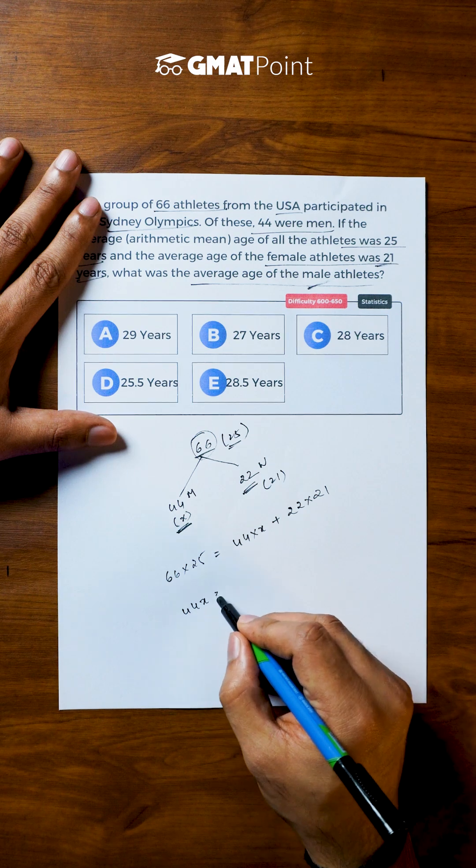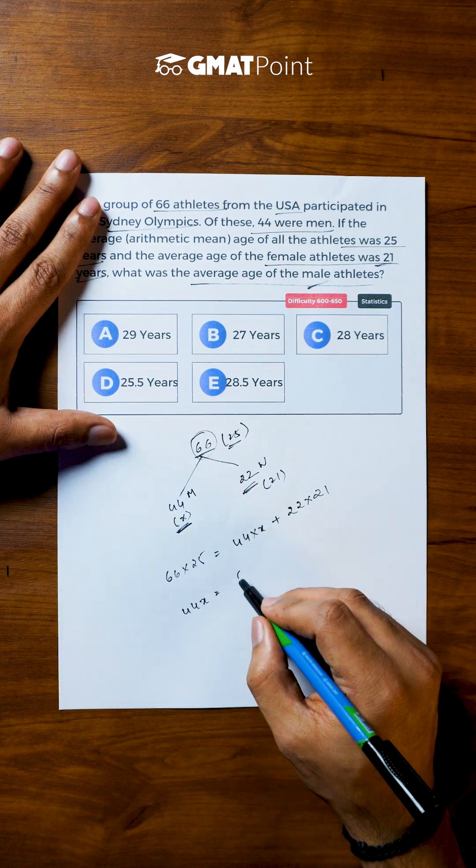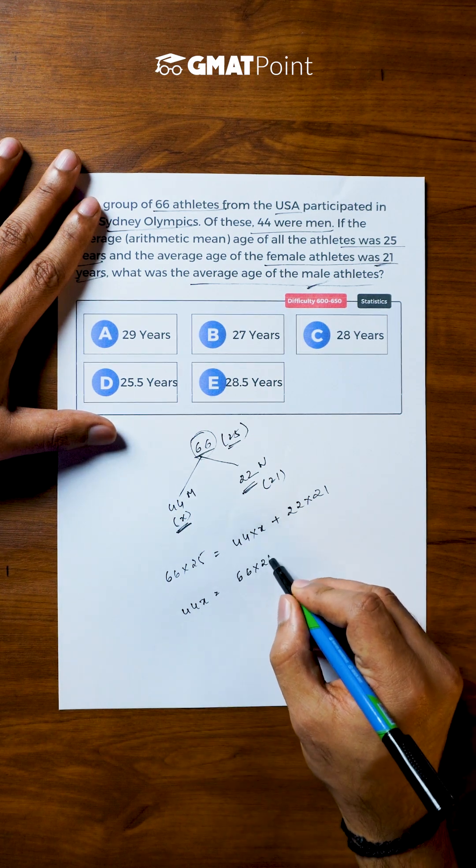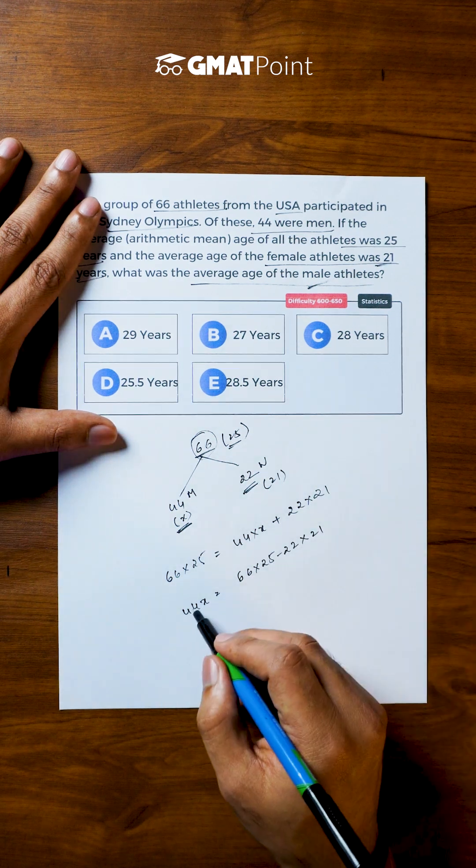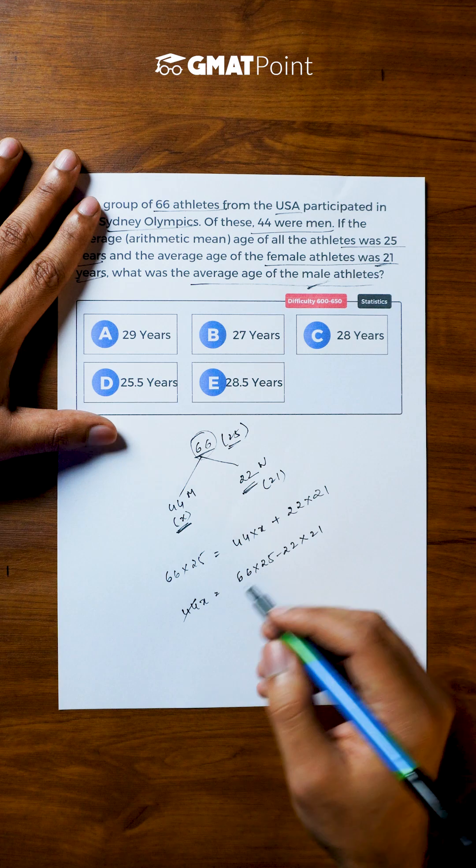So the value of x can be calculated as 44x is equal to 66 into 25 minus 22 into 21. We can see that all these values are multiples of 11.